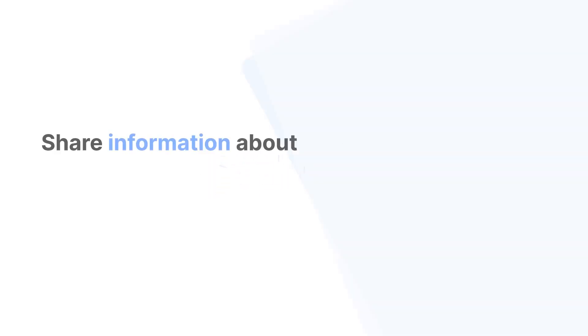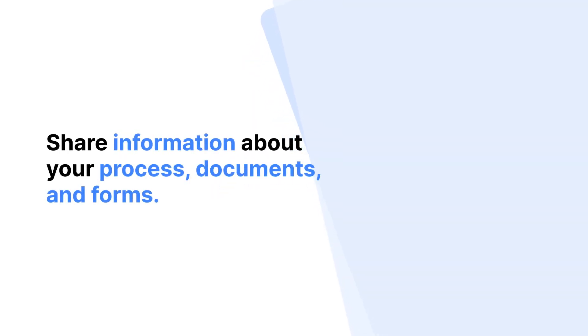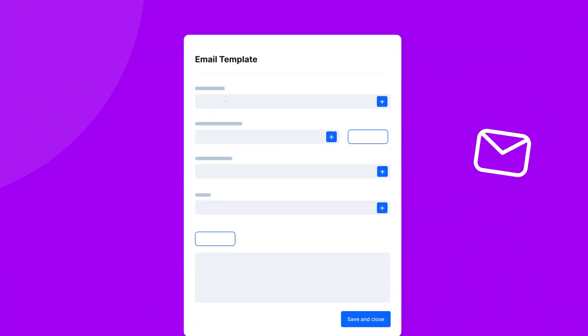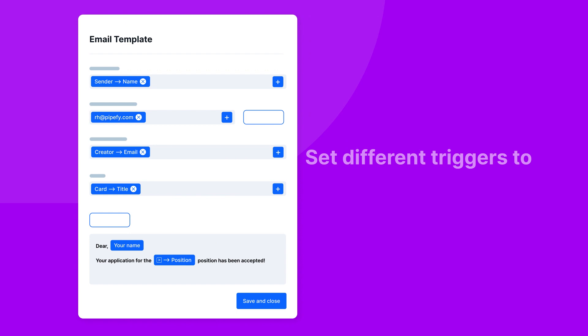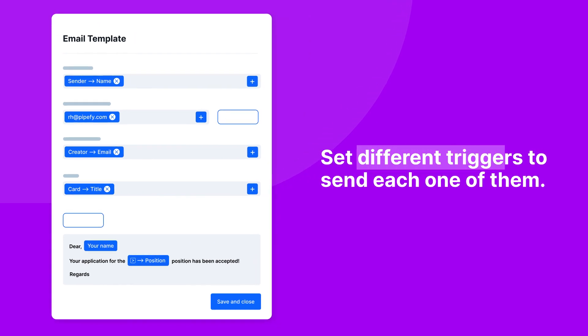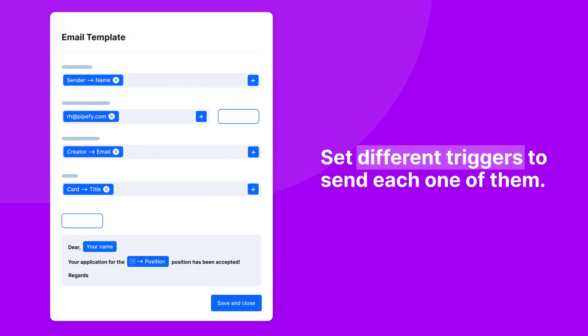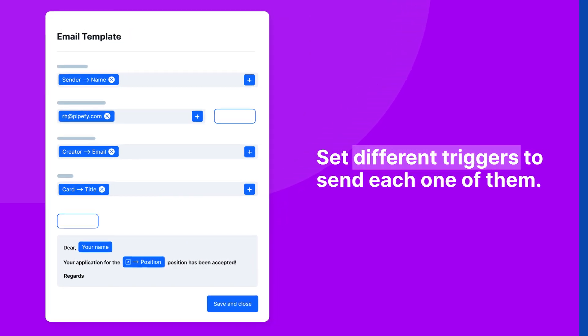Build an automation flow to share information about your process, documents, and forms. Create many email templates for the same process and set different triggers to send each one of them. Here's how.